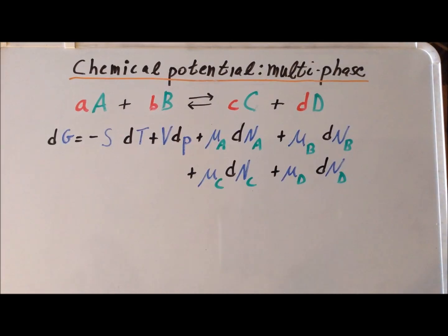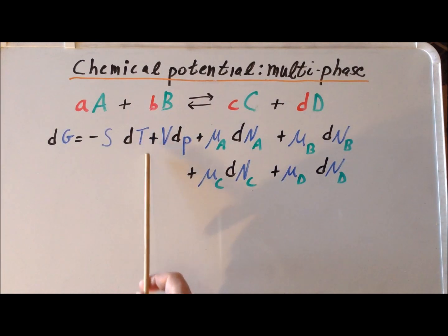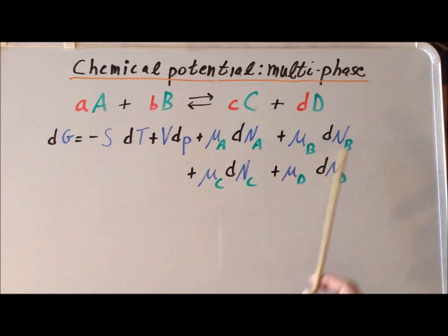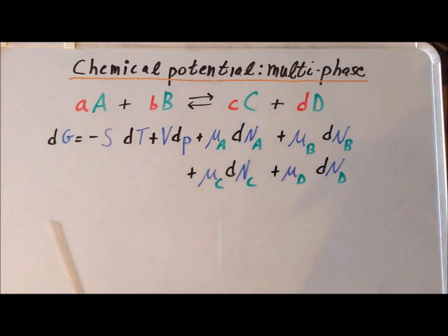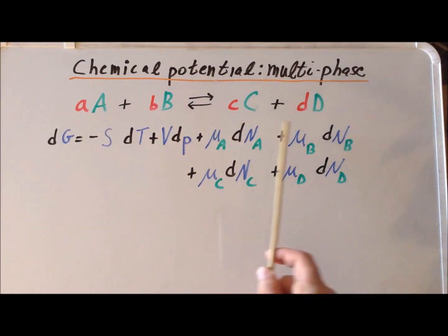Then we can write an expression for the differential of G, the Gibbs energy, as follows, realizing that we have extended it based upon the fact that we have a four-phase system now — with phases a, b, c, and d.